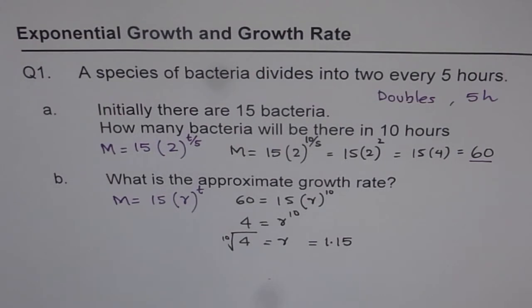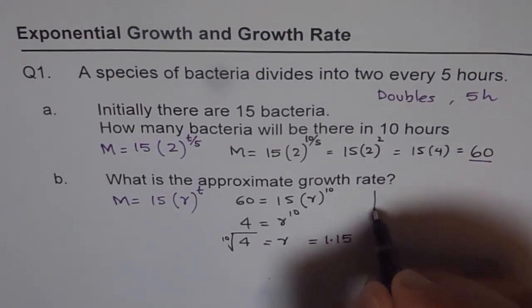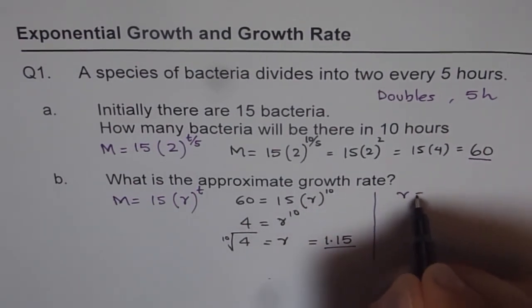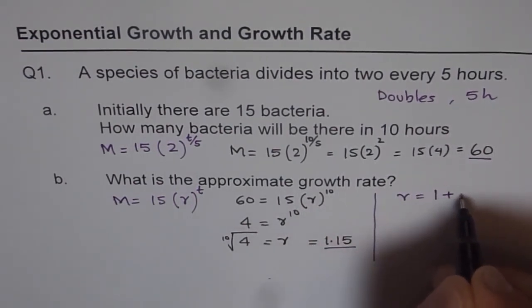Now that is also very critical. And I have seen sometimes students not very clear about it. They will write 1.15 as a growth rate. Well, the growth rate is not 1.15.